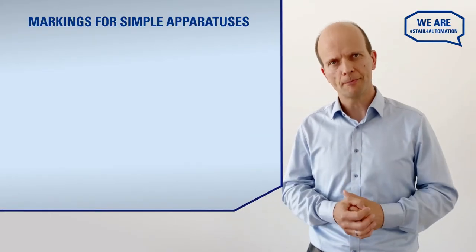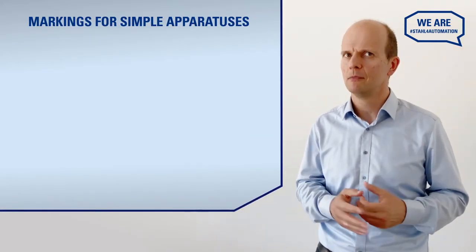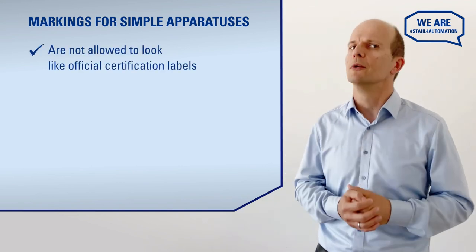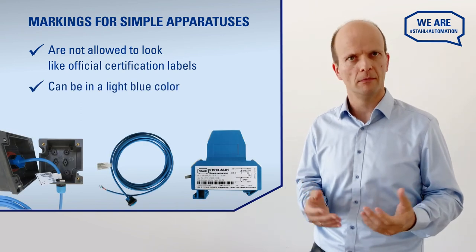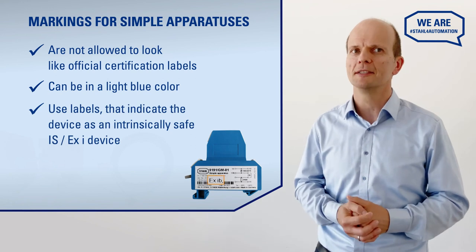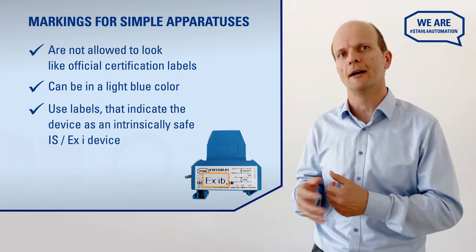Why? Intrinsically safe loops are required to be specially marked, and the simple apparatus is part of such a loop. Just imagine when somebody needs to check these circuits a few years down the road — they should immediately recognize that it contains an IS circuit. As a rule, these markings must be very clear, but they are not allowed to look like an official certification label. The simplest way would be to use light blue color or labels that indicate the device as an intrinsically safe IS or EXI device.